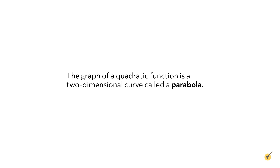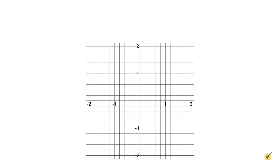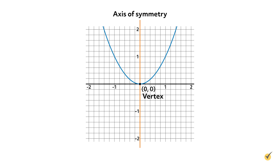However, all parabolas share the same u-shape. A parabola is symmetric over an invisible line called the axis of symmetry. The vertex is the point on the parabola where the graph intersects its axis of symmetry.